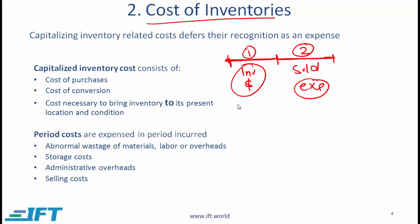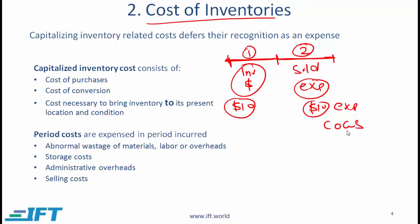So if you spent $10 on creating a piece of inventory, then in period 1 we create an asset called inventory worth $10, and then when this asset is sold in period 2, that is where we remove the $10 from the balance sheet and show it as a $10 expense on the income statement. That expense is called the cost of goods sold or cost of sales.